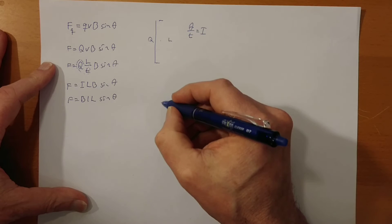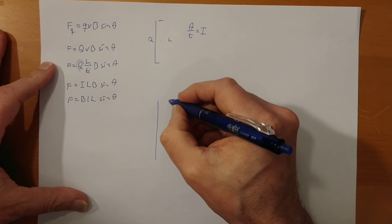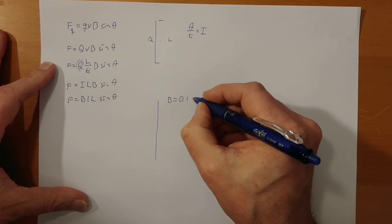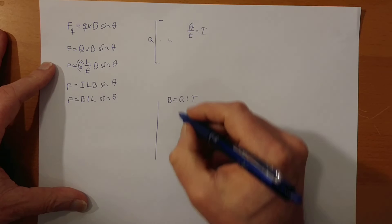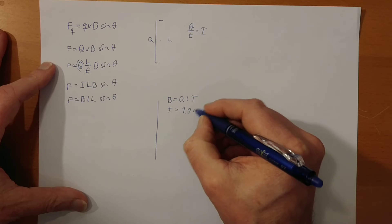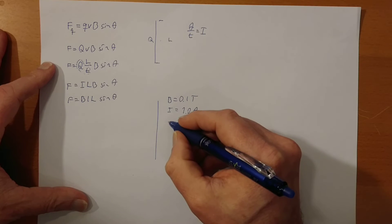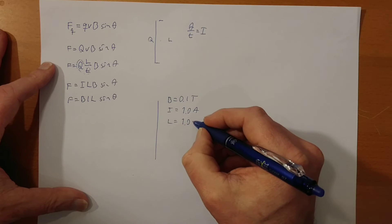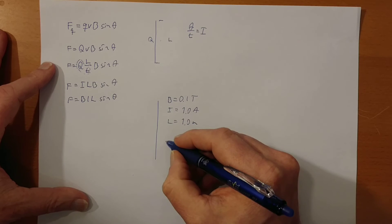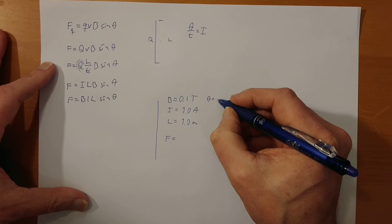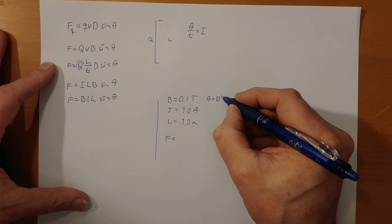So for example, say we have a B field of, say, a rather strong one, 0.1 Tesla. Say we have a current of 1.0 amps, and the length of the wire in the magnetic field is 1.0 meters, and then the angle equals to 0 degrees.